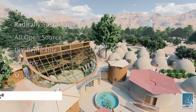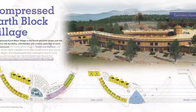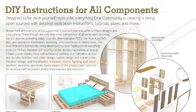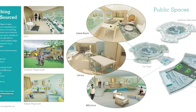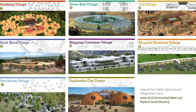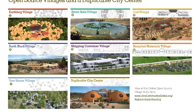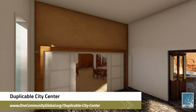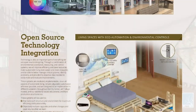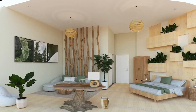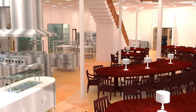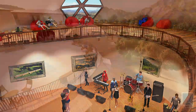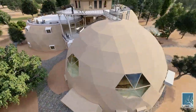The One Community approach to highest good housing is eco-artistic home building that is affordable, sustainable, do-it-yourself, duplicable, resource and space efficient — and consists of seven different sustainably constructed village models. One Community is also creating an open source duplicable city center designed to be LEED Platinum certified, provide 12 guest rooms, dining for over 150 people, and laundry and recreation space for over 300 people — all while saving money, time, space, and resources.